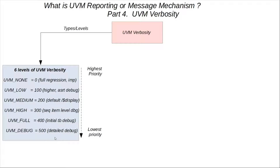UVM Debug, on the other hand, has the lowest priority as its level is 500. This is for highly detailed debug. It can be used freely because it won't be printed unless you specifically want everything to be printed — that's only when you'd want to set the verbosity level to UVM Debug. You could have a lot more messages to debug very small or detailed things, and you can set the verbosity of those particular UVM info calls to UVM Debug.